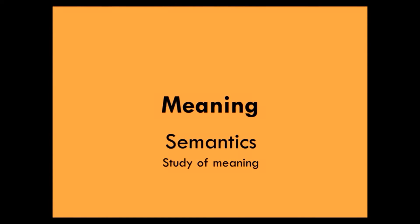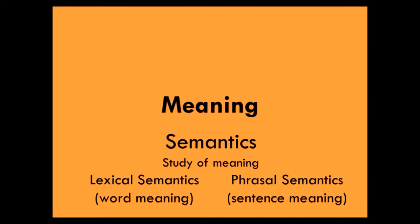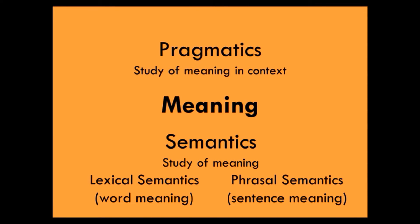The study of meaning is called semantics. There are two main branches of semantics: lexical, or the meaning of words, and phrasal, or the meaning of combinations of words. When studying language meaning, linguists also deal with pragmatics, or the study of meaning in context.